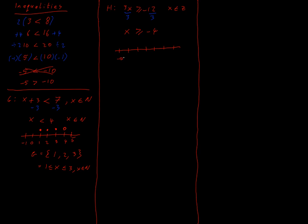I can draw a number line now, starting at minus 5, minus 4, minus 3, minus 2, minus 1, 0, 1, and so on. In terms of picking where your number line goes, just going above and below your restriction by one or two spaces is enough. All you want to do is make it very clear to your examiner that you know where the group begins and ends.